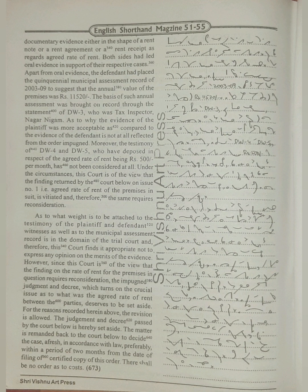Apart from oral evidence, the defendant had placed the quinquennial municipal assessment record of 2003-09 to suggest that the annual value of the premises was Rs. 11,520. The basis of such annual assessment was brought on record through the statement of DW3, who was tax inspector Nagar Nigam. As to why the evidence of the plaintiff was more acceptable as compared to the evidence of the defendant is not at all reflected from the order impugned.